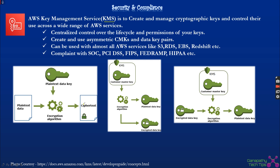What we do is encrypt the data using the plain text data key, then encrypt the plain text data key using the Customer Master Key, and store the ciphertext along with the encrypted data key. Without the CMK, the data cannot be decrypted. For decryption, we use the CMK to decrypt the encrypted data key to get the plain data key, then use that to decrypt the ciphertext. This is called the two-layer envelope encryption mechanism.